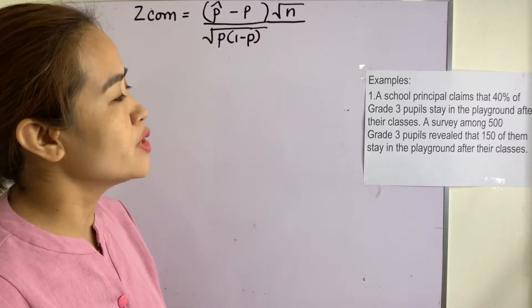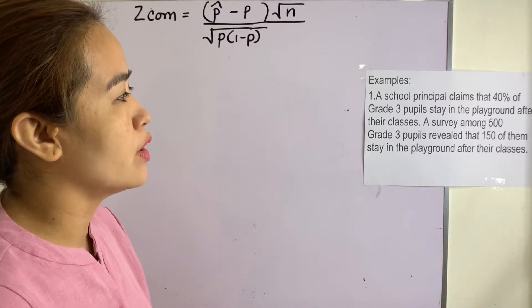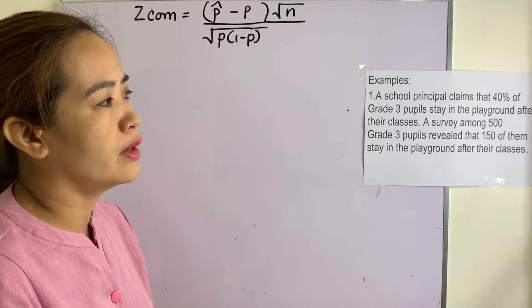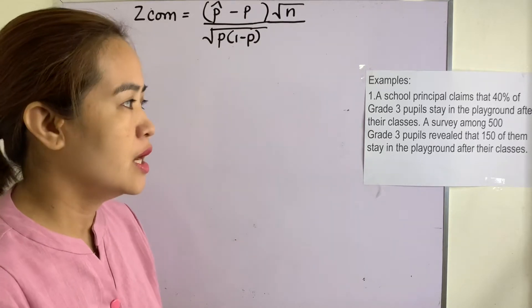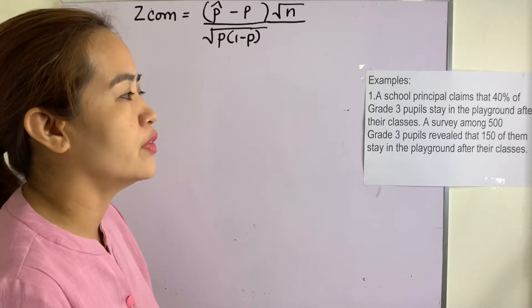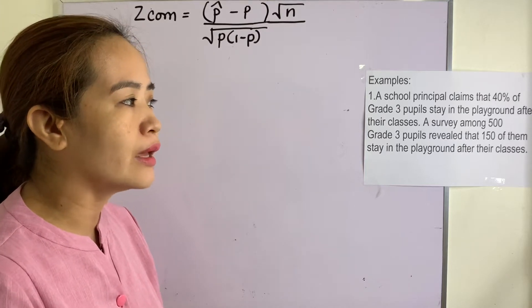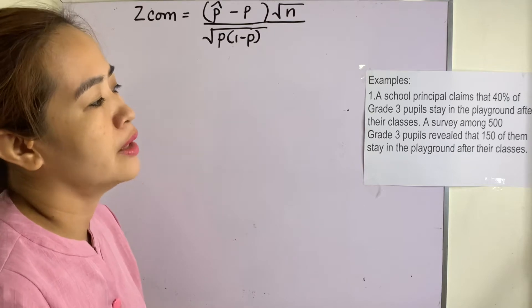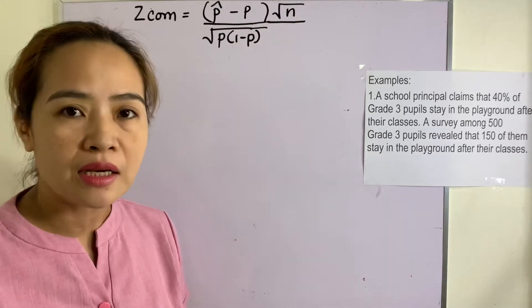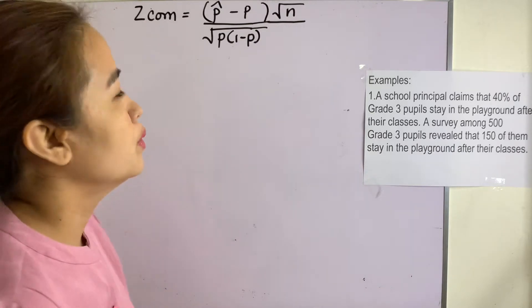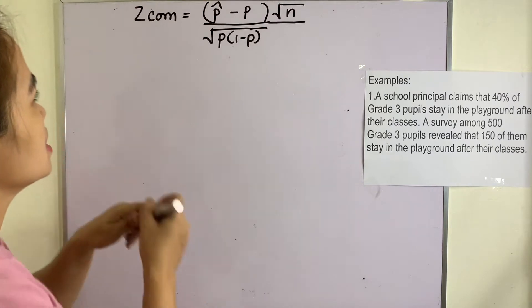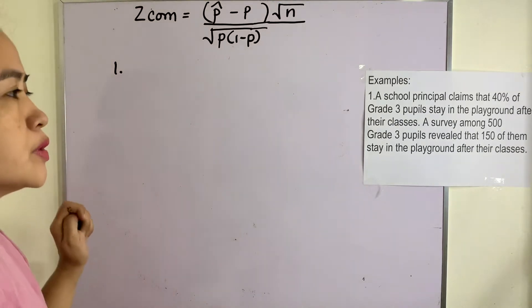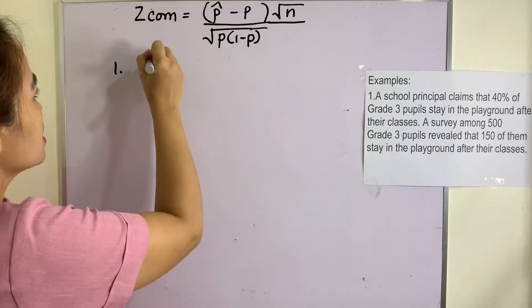Example number one: A school principal claims that 40% of grade 3 pupils stay in the playground after their classes. A survey among 500 grade 3 pupils revealed that 150 of them stay in the playground after class. We will be computing for the z_com.